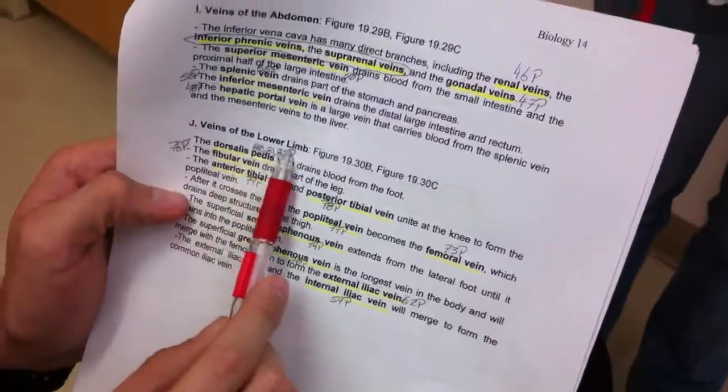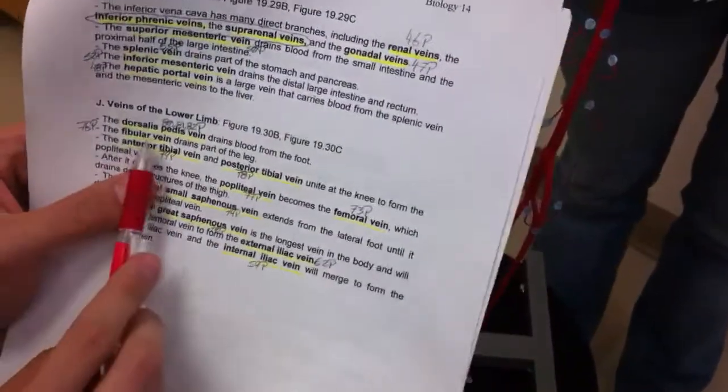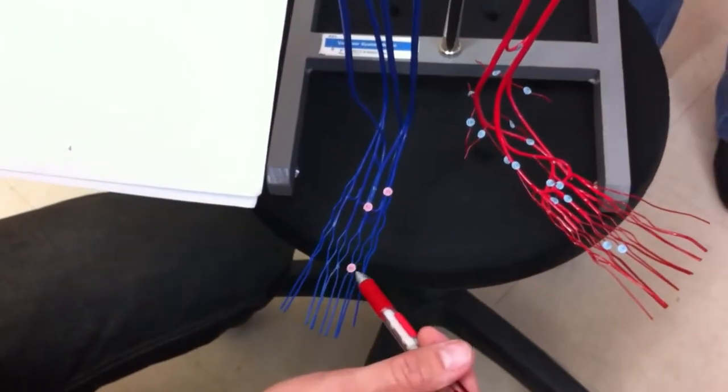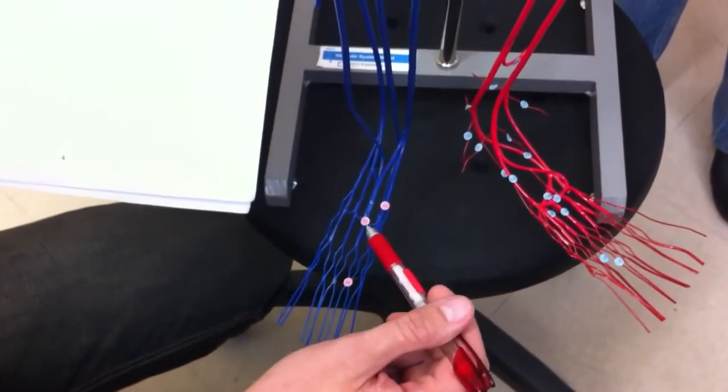Okay, we're studying part J, veins of the lower limb, starting with the dorsalis pedis veins, which are right here, numbers 80, 81, and 82.